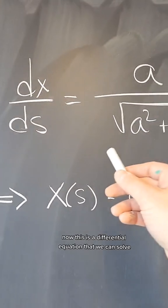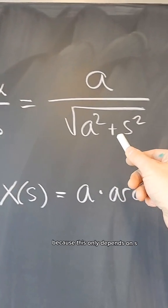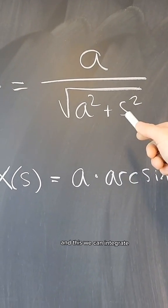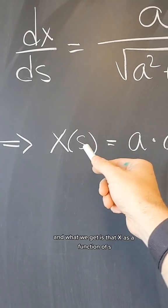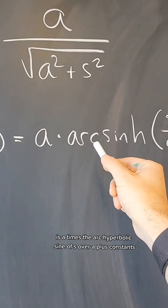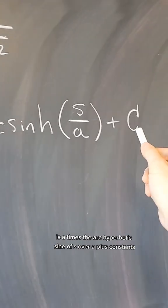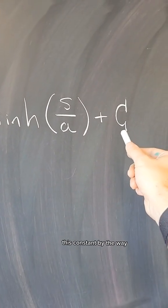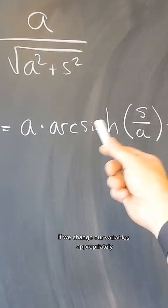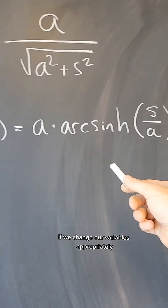Now this is a differential equation that we can solve because this only depends on S and we can integrate. What we get is that X as a function of S is A times the arc hyperbolic sine of S over A plus constants. This constant, by the way, can be chosen to be zero if we change variables appropriately.